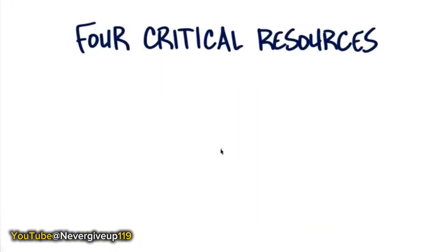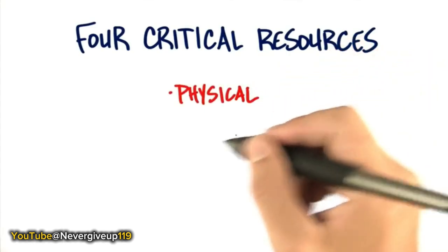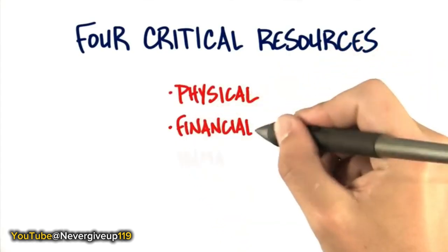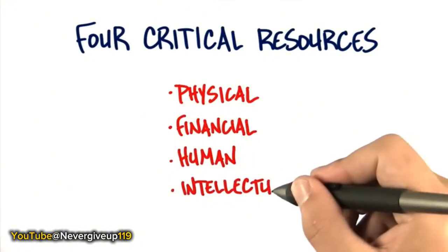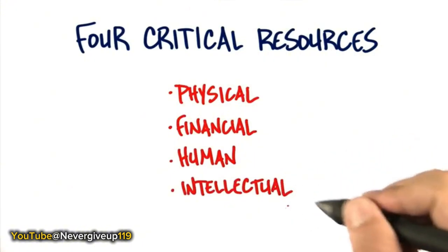There are four critical resources you need to think about: physical resources, financial resources, human resources, and intellectual resources. Let's take a look at each one of these.